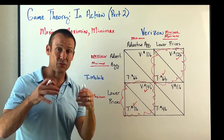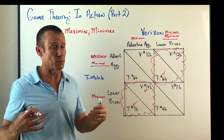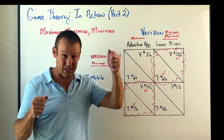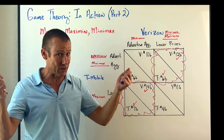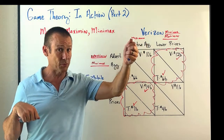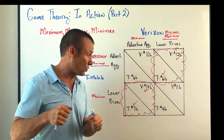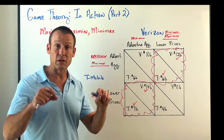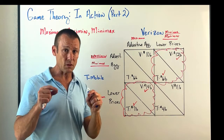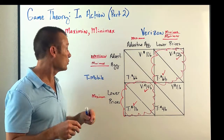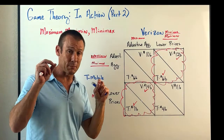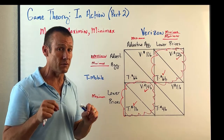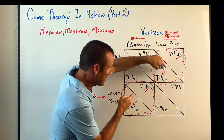So we've got three strategies. Maximax is the most optimistic — just go after your maximum, though you might not get it because it depends on the other player. That leads to T-Mobile lowering price and Verizon advertising aggressively. Maximin means maximize your minimum; minimax means minimize the maximum of your opponent. Those two strategies lead us to those other outcomes.